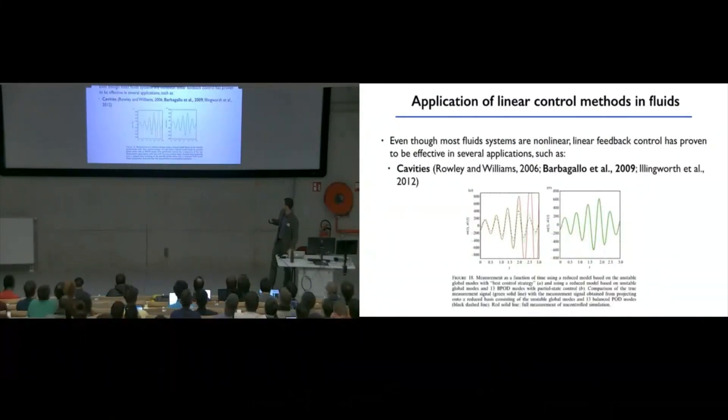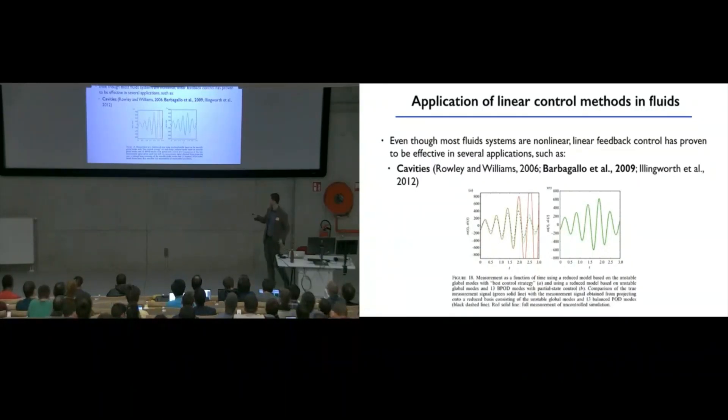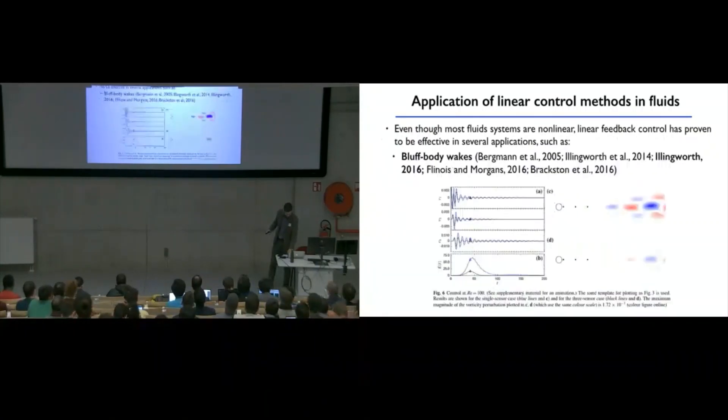Of course, you have choices regarding where you put your sensors and actuators, which is sort of beyond the scope of the example that I looked at. But by modeling the system in the right way, you can actually utilize some of these tools in practice. So one can also look at flow over cavities. So this was some work by Baba Gallo et al, I think including Peter Schmidt and Denny Sipp, where you have an uncontrolled system, which is this red line. When you turn on your feedback controller, you can control this instability. And I believe this was using LQG control. So, something similar to the optimal control that we talked about.